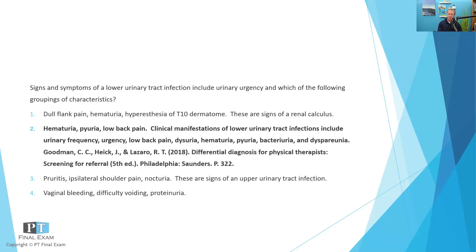The other options: dull flank pain, hematuria, and hyperesthesia of T10 would be in the case of a renal calculus or some type of renal infection. Pruritus, ipsilateral shoulder pain, and nocturia are signs of either a ureter or kidney infection — nocturia indicating frequent night urination. Vaginal bleeding, difficulty voiding, and proteinuria would be signs of usually some type of prostatitis, or in the case of vaginal bleeding, some type of cervical cancer.